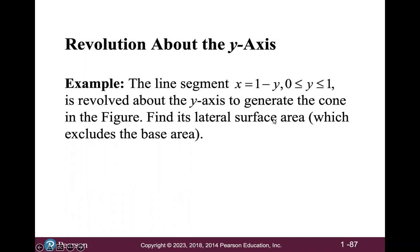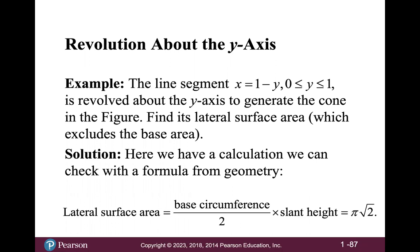Notice that when we're calculating the surface area, that excludes the base area. So you might be thinking, picturing a cone, if the cone had a cap on the bottom, that you would include the area of that cap. We're not going to do that in this case because that is not part of the surface. Okay, so the geometry formula for this, the lateral surface area, so that's just the sides of the cone, is the base circumference divided by 2 multiplied by the slant height. And that comes out to pi times the square root of 2. So hopefully when we find this area using calculus, it will come out to that same value.